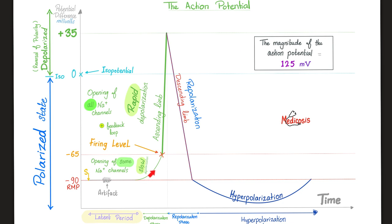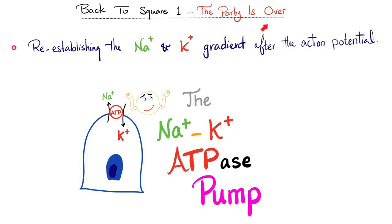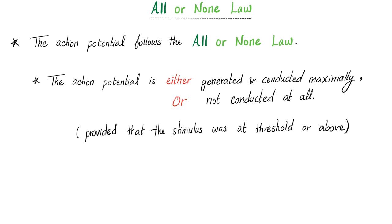What's the difference between the slow rising phase and the rapid upstroke? In the slow depolarization phase, only some sodium channels are open. In the rapid phase, all sodium channels are open. After the action potential, the sodium-potassium pump re-establishes the gradient by pushing sodium out and potassium in. The all-or-none law means: I either generate and conduct maximally or not at all. Give me threshold stimulus, I give you an action potential. Give me sub-threshold, I give you only a local response.